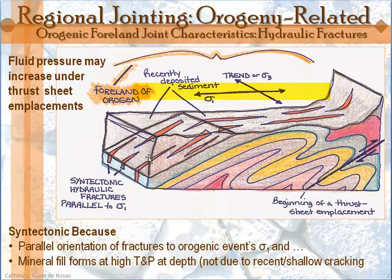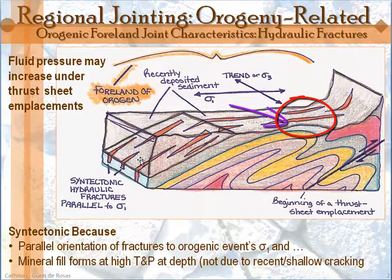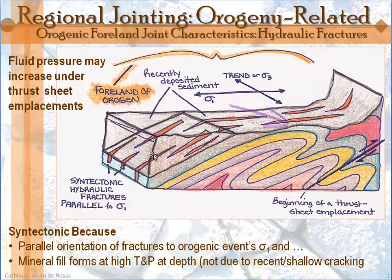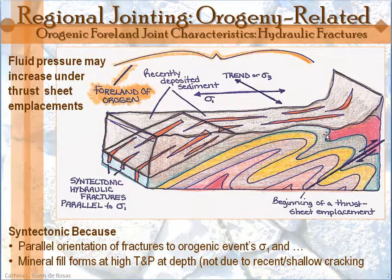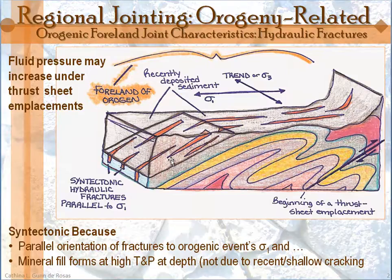And two, often the hydraulic fractures are filled with mineral fill that is characteristic of high pressures and temperatures. What that means is that it didn't form shallow, and it was under high pressure. A high pressure — especially fluid pressure — is often achieved when thrust sheet emplacements characteristic of orogens create an increase in overburden, an increase in pressure and depth that can fill up these hydraulic fractures, reduce the solubility of minerals, and create precipitate. That's a very specific characteristic of these forelands.